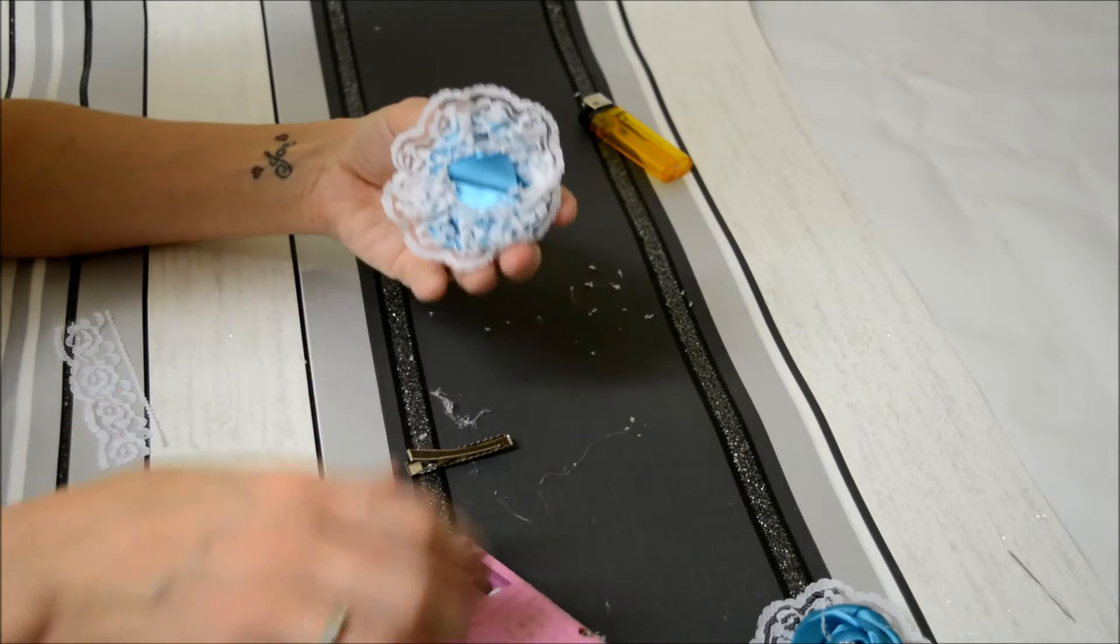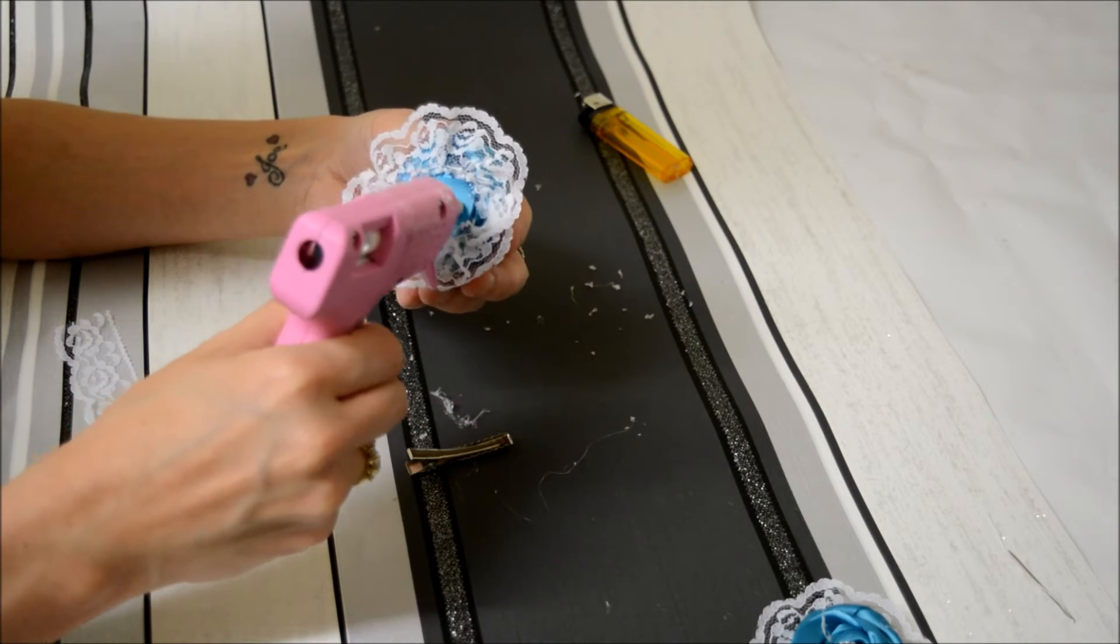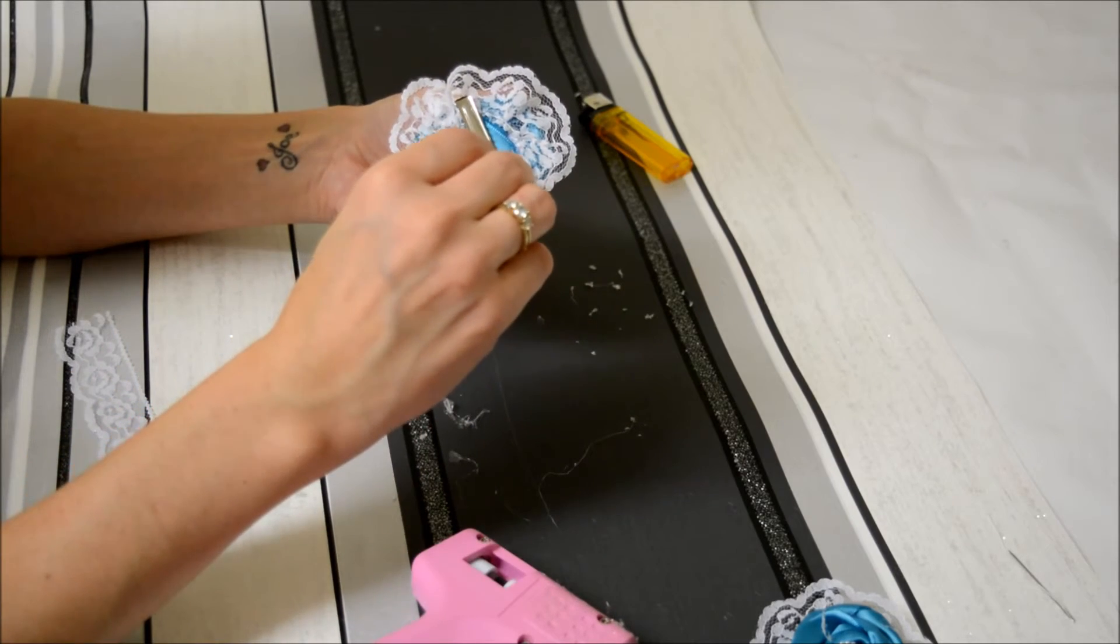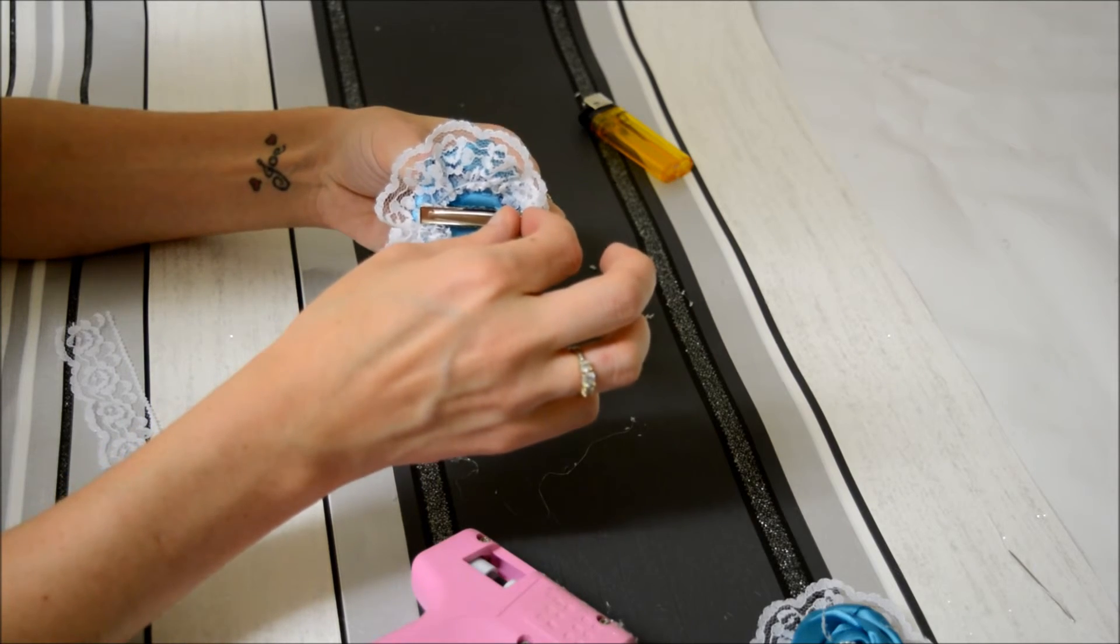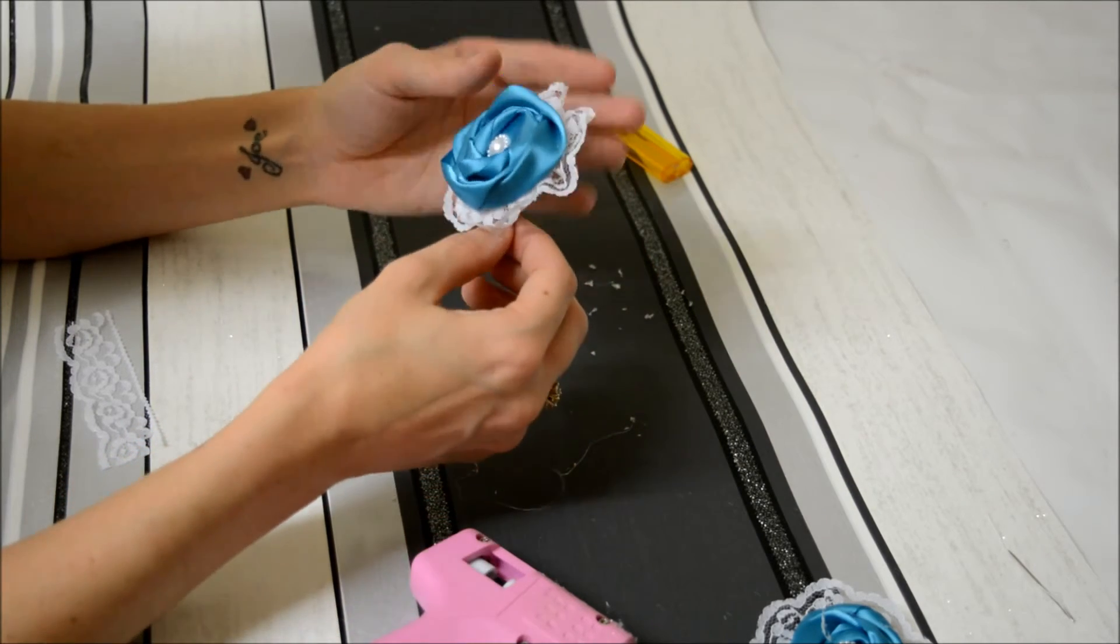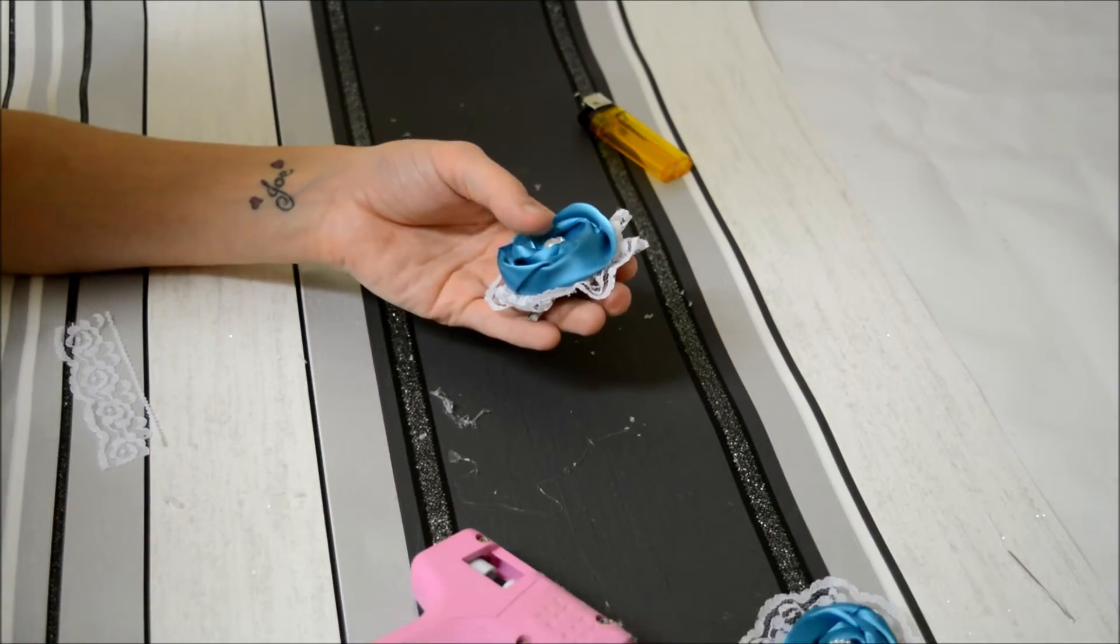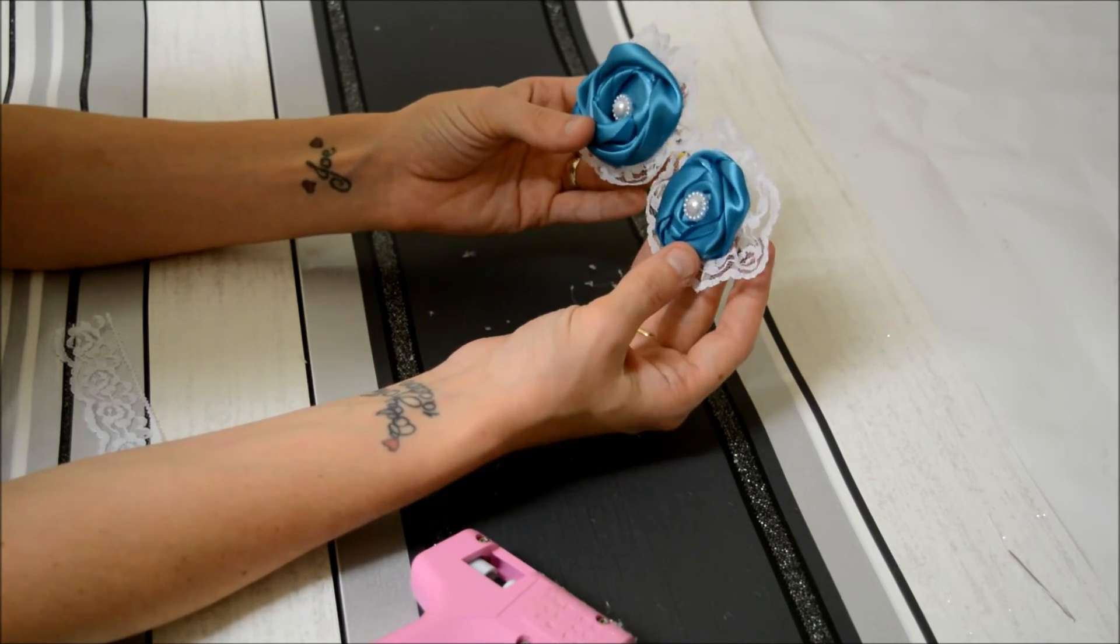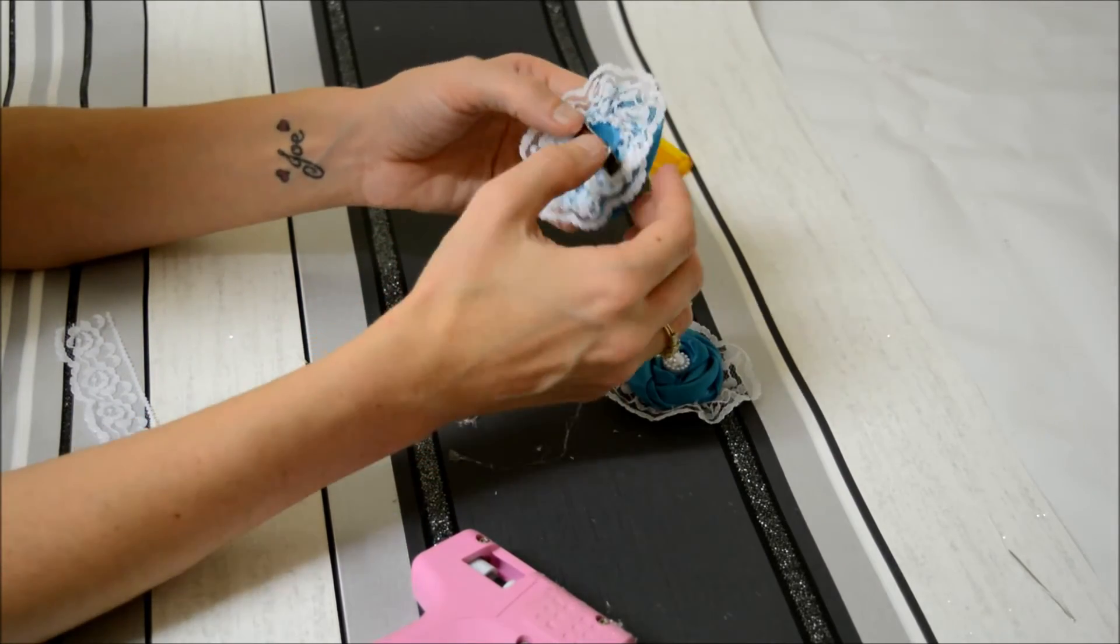Then apply some glue to the back and push your clip into place. And there you go - your flower and lace head bow.